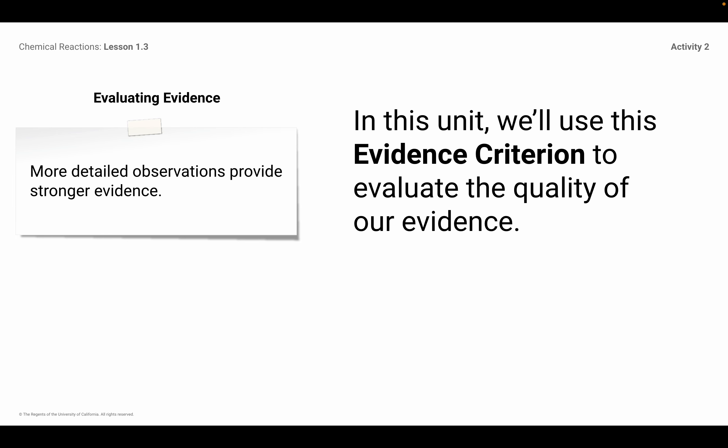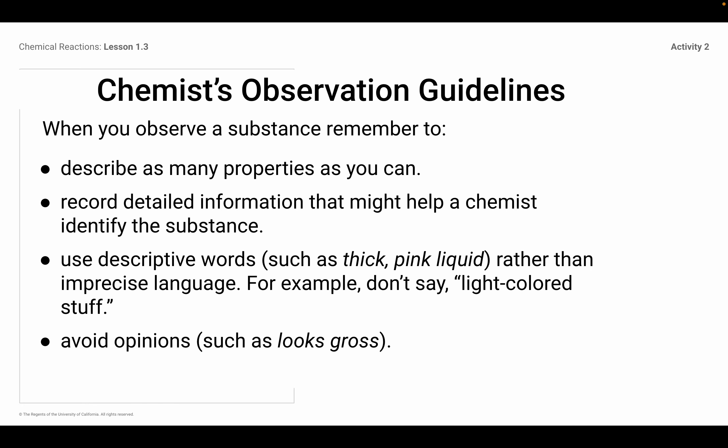It makes a lot of sense — the more detailed you can be when you're describing something, when you're identifying your observations, the more detailed you are, that provides super strong evidence. So when you observe a substance, remember to describe as many properties as you can. Record detailed information that might help a chemist identify the substance. Use descriptive words such as 'thick pink liquid' rather than imprecise language. We don't say 'light-colored stuff' or 'looks like Pepto-Bismol' or 'it looks like gum.' You never compare it to something else — you use precise language. Avoid opinions like 'it looks gross' or anything with 'it looks like.'